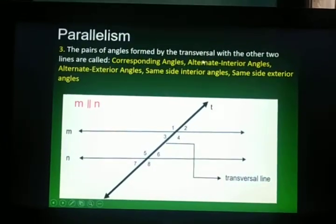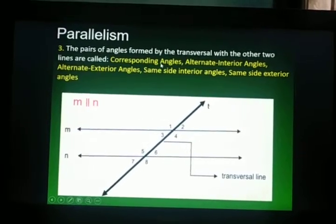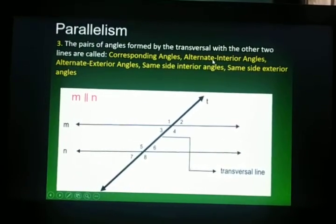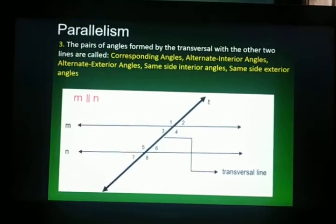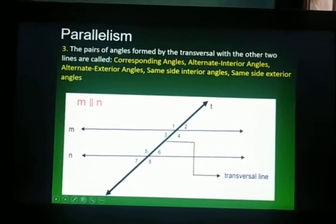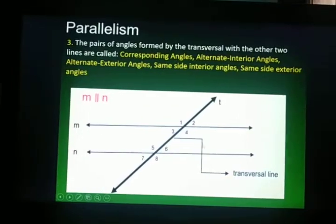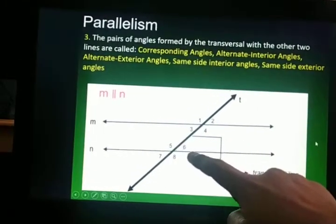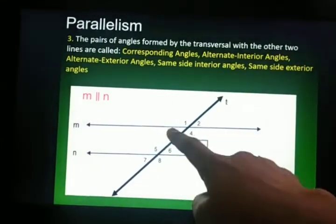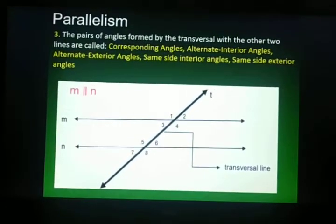Next, alternate interior angles — and by the way, corresponding angles are congruent. Alternate interior angles are also congruent. Alternate means one angle is on one side of the transversal and the other is on the other side, but they are congruent, and they are inside the parallel lines. Alternate interior angles are angles 3 and 6, and angles 4 and 5. They are congruent — they measure the same.